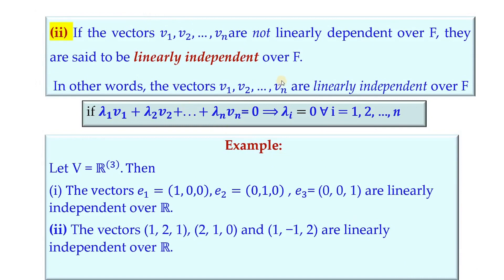Next is the definition of linearly independent vectors. We say v1, ..., vn are linearly independent if they are not linearly dependent — in other words, if the linear combination equated to zero implies each scalar λi = 0 for all i from 1 to n. Here the zero on the left refers to the additive identity in V, and the zero on the right refers to the scalar 0 in F.